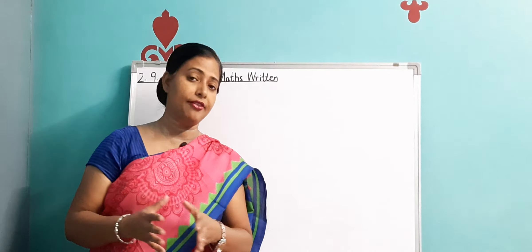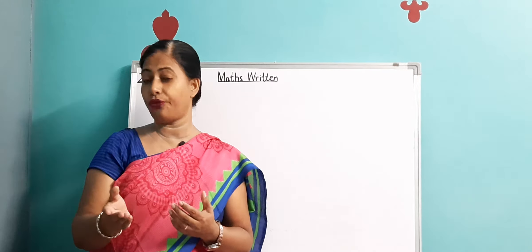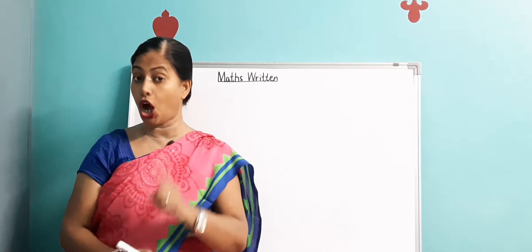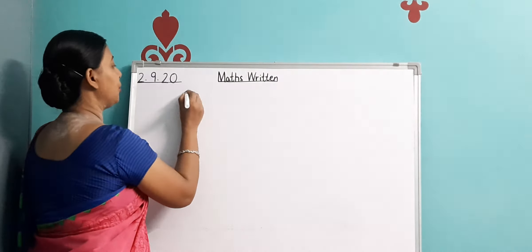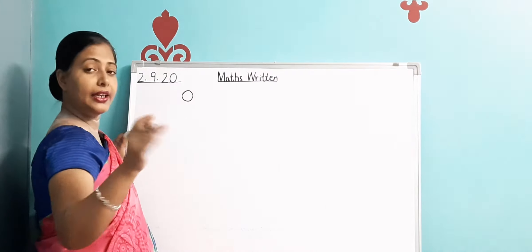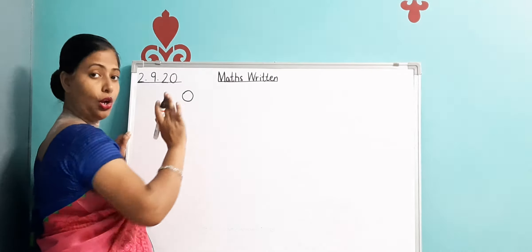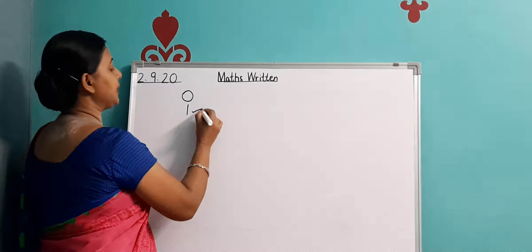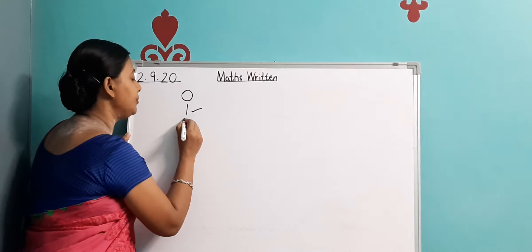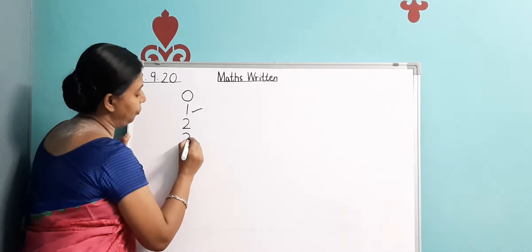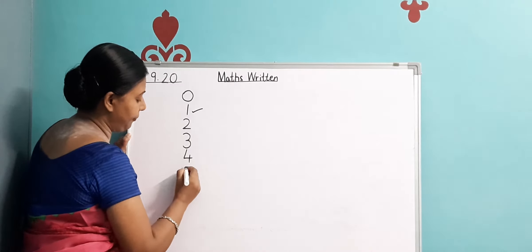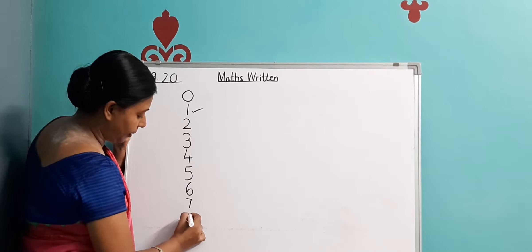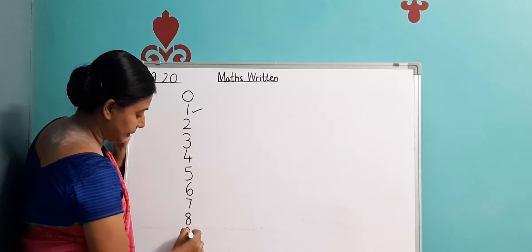In the same manner, if I have toffees then I'll count the toffees once again from number 1. We always start counting from number 1 because before 1 comes 0. This is 0, but 0 means nothing — there is no value of 0 all alone. 0 means nothing. So we start with number 1. After number 1 comes 2, then 3, then 4, then 5, then 6, 7, 8, 9.